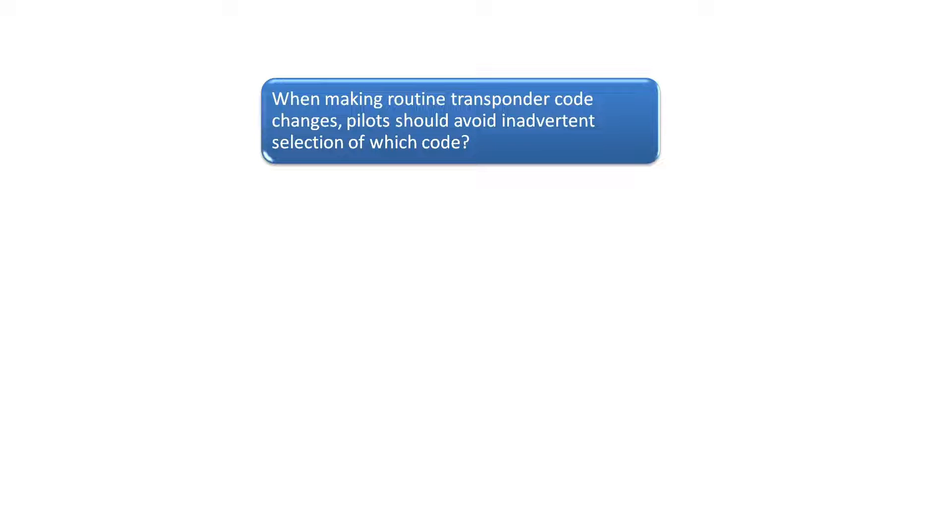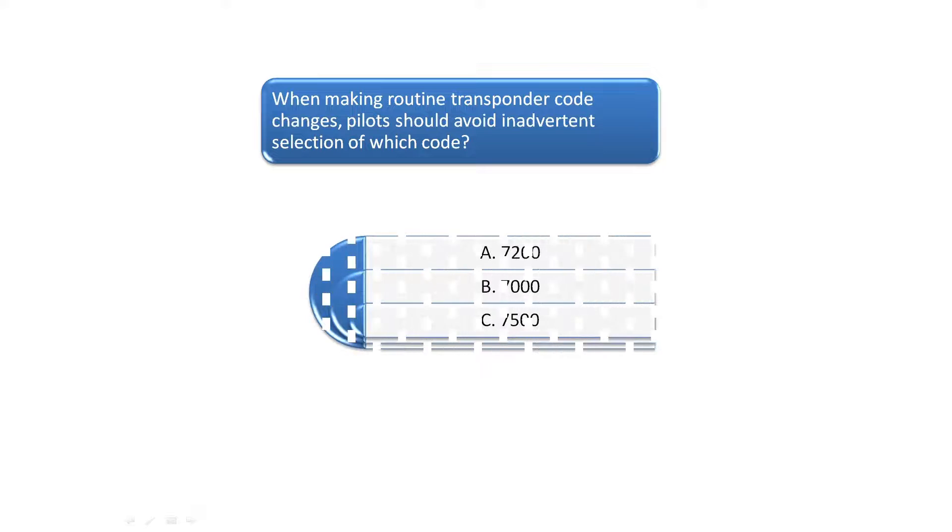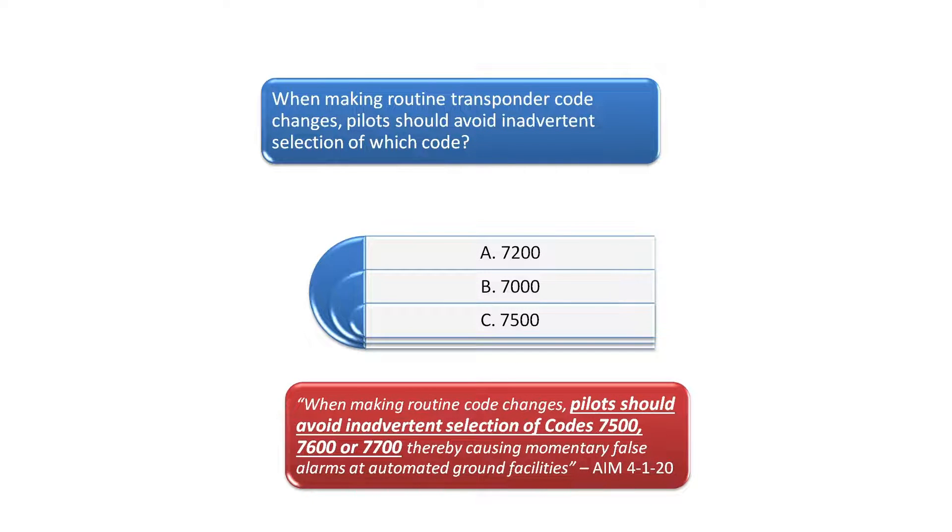Question 5 asks. When making routine transponder code changes, pilots should avoid inadvertent selection of codes 7500, 7600 or 7700 thereby causing momentary false alarms at automated ground facilities. The correct answer is C, 7500.